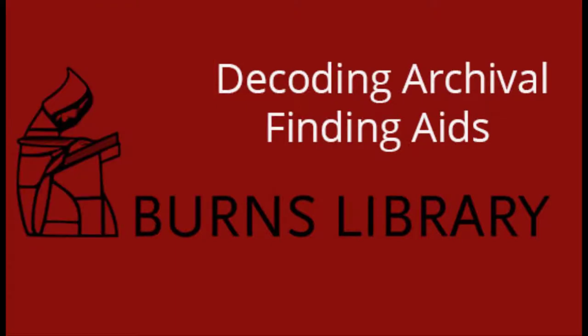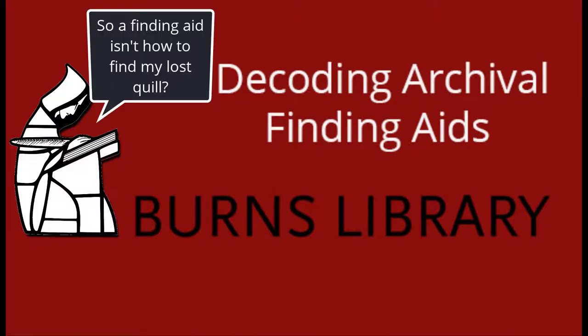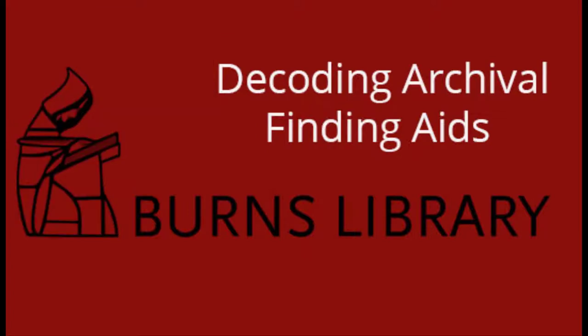What is a finding aid? A finding aid is the most common way for an archival primary source collection to be described. Think of it as a high-level inventory, like a table of contents of materials in a collection.